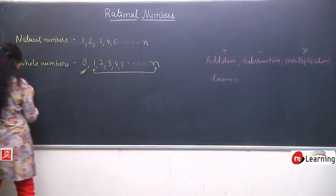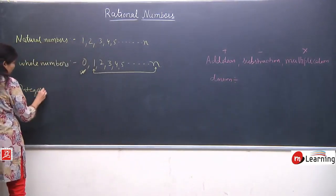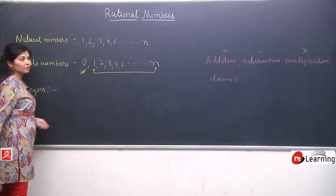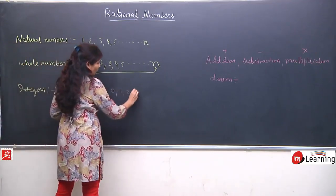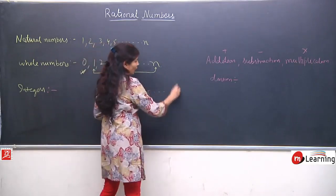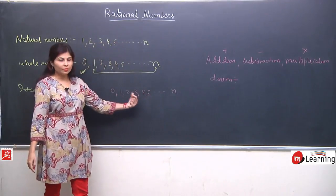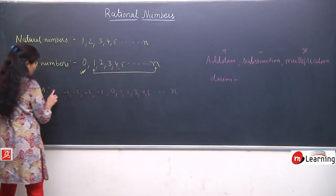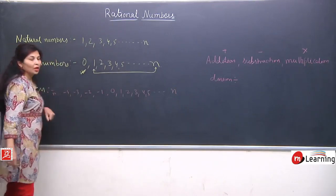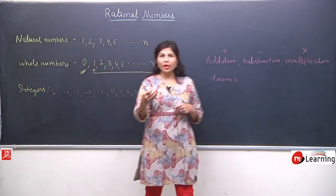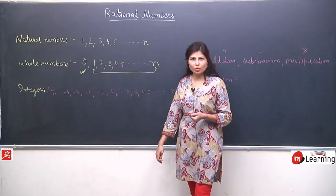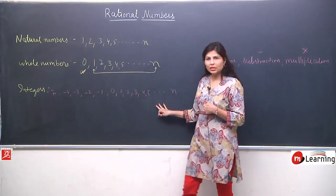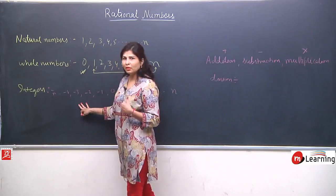After that we learned the third type: integers. We have already studied this in our previous classes. In whole numbers we had 0, 1, 2, 3, 4, 5 up to n. Now, if negative numbers are also included — both positive on the right of 0 and negative on the left of 0 — these are called integers. Numbers in the right direction from 0 are positive integers and in the left direction are negative integers.